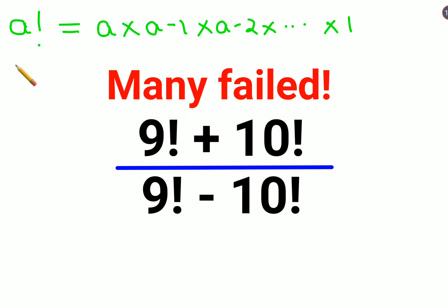So let's take for example, if I wanted to take the factorial of 4, that would be 4 into 3 into 2 into 1. Similarly, if I wanted to take the factorial of 3, that would be 3 into 2 into 1.